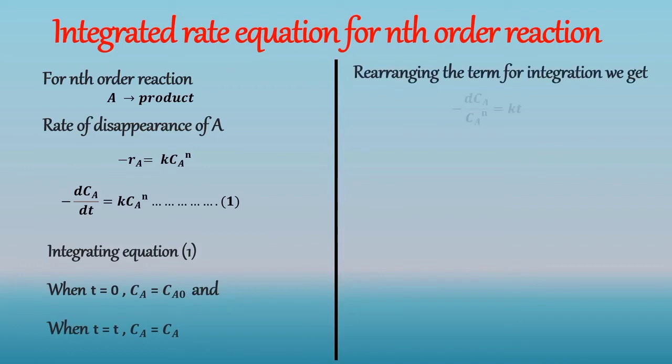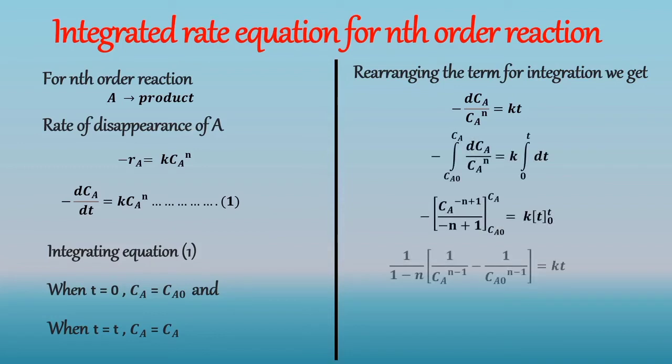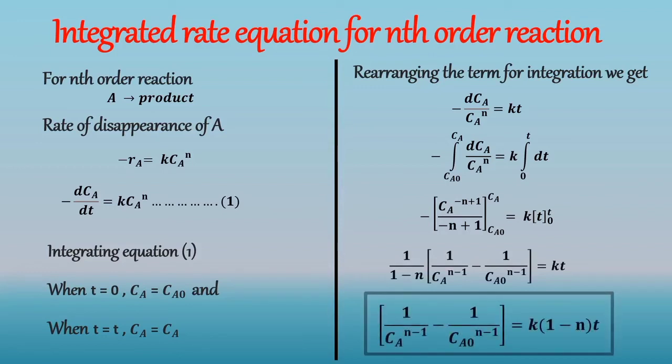We get minus dCA by CA raised to n equals kt. After integration and applying limits we get 1 by CA raised to n minus 1 minus 1 by CA0 raised to n minus 1 which equals k times 1 minus n times t.